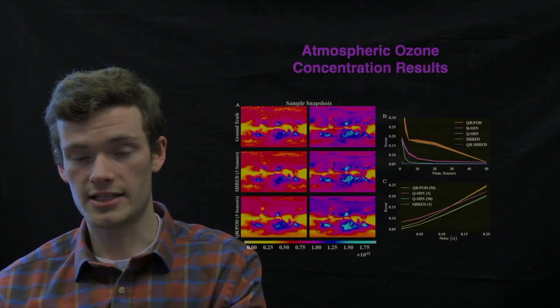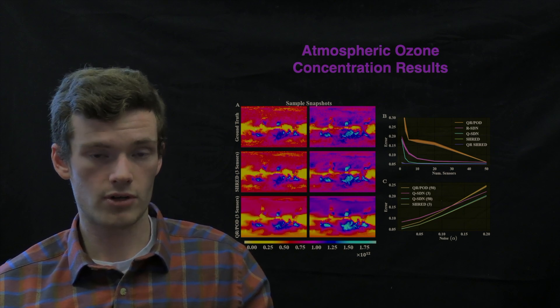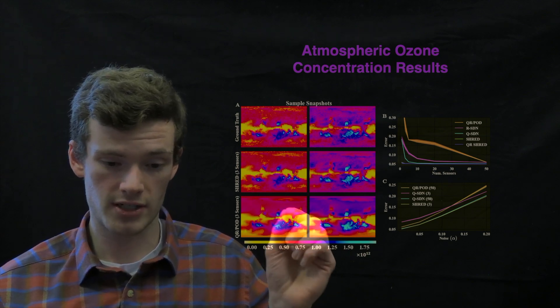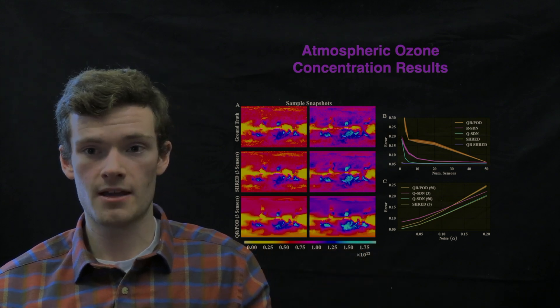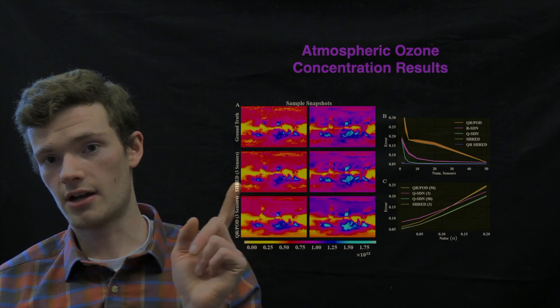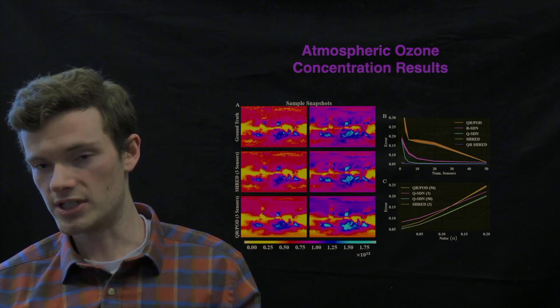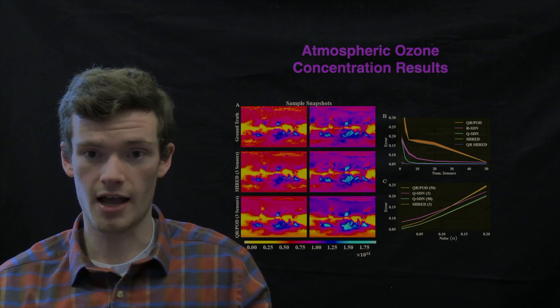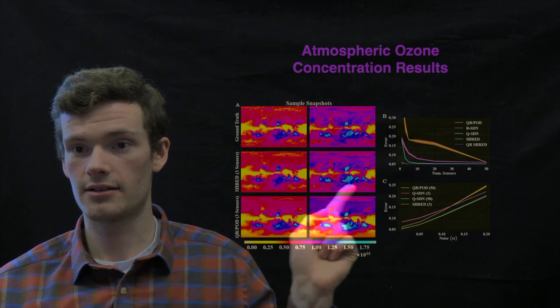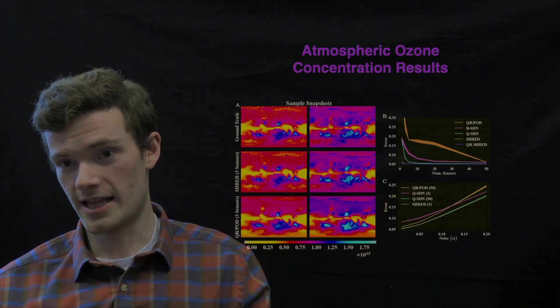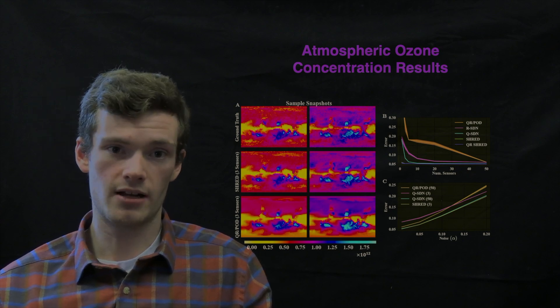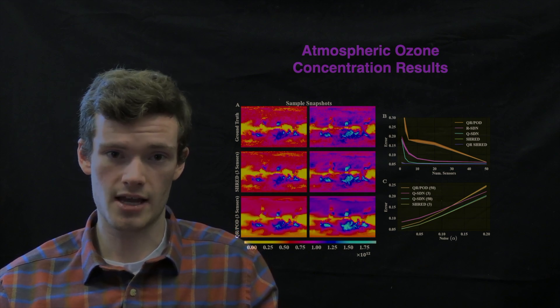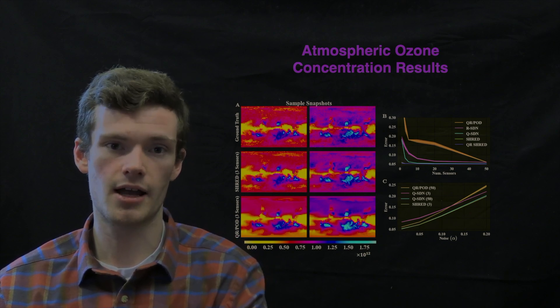So one of the example data sets that we've looked at is atmospheric ozone concentration. So this data set consists of about 2,600 samples of atmospheric ozone concentration at different latitude, longitude, and elevation. And here we have the reconstruction of SHRED and a linear method, QRPOD, which is the same as the linear method I talked about earlier. And we see that visually, SHRED greatly outperforms the linear reconstruction. And over on this side of the board, we also see that this holds in the case of increasing noise, as well as shows that SHRED requires far fewer sensors to achieve excellent reconstructions than the competing methods of the shallow decoder network and the linear reconstruction.